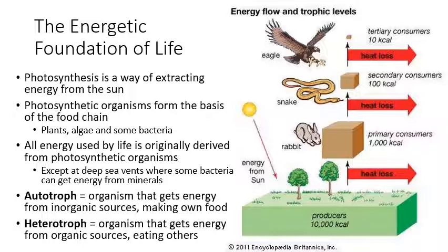There are several types of photosynthetic organisms. Of course we have plants — all plants do photosynthesis. We also have algae and some bacteria. Algae are basically any eukaryote that does photosynthesis but is not a plant. So if it has a nucleus and it does photosynthesis but it's not a plant, then it's algae. You also have some bacteria that do photosynthesis in different lineages. The most important type of bacteria that do photosynthesis would be the cyanobacteria, which we'll mention again in a moment.